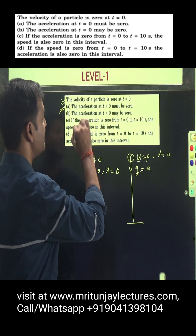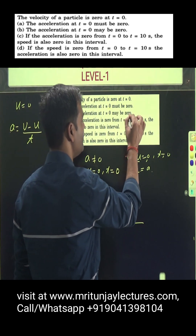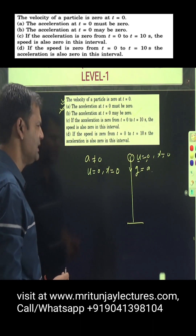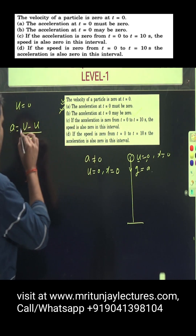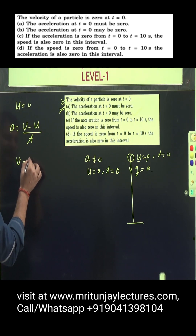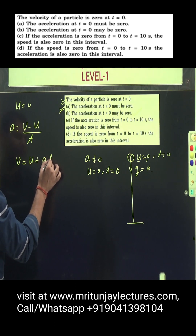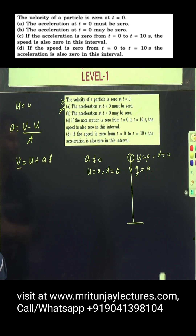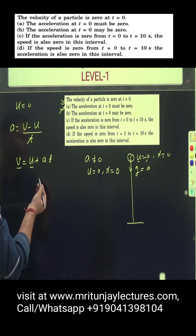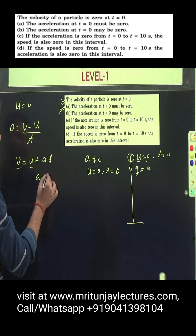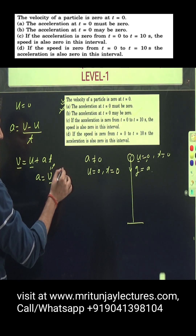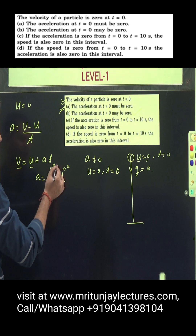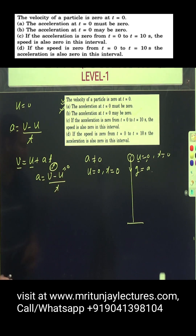Now, the second option: acceleration at t=0 may be 0 — yes, why not? We know that v equals u plus a times t. If velocity v is 0 and u is also already given as 0, then a could also be 0. Using a equals (v minus u) divided by t: if v is 0 and u is 0, then a is also 0. So option B — 'may be 0' — is correct.